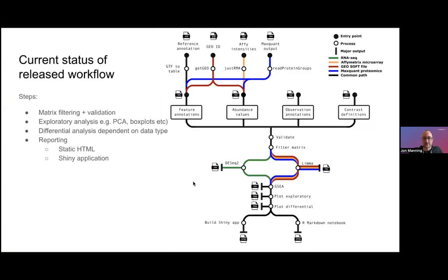The current status of the workflow looks something like this. If I could get you to concentrate just on this middle row here, we have four key inputs to the workflow: we have feature annotations, we have the abundance values, we have the observation annotations (so the sample sheet I just mentioned), and we have the contrast definitions. These all four get combined. We validate them to make sure these things are consistent among each other. We filter the matrices to do this zero filtering and so on, and then there's currently two different differential analysis methods used dependent on the input data type. And then we proceed to optional gene set enrichments and exploratory analysis, differential analysis, and the final reporting steps.